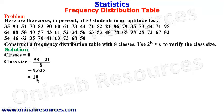And this gives 9.625, which is approximately 10. You should always round up to 10. So we have to use 2 raised to power k greater than or equal to n to verify. And if you see now, 2 raised to power 10 is greater than 50. So that one is taken care of.